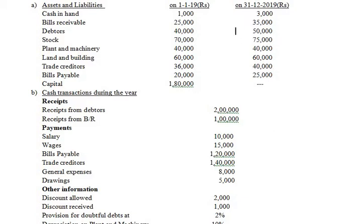When converting single entry data into double entry system, these six steps must be followed. The first step is to prepare the opening statement of affairs. However, in this question both the opening and closing data are already given, so we need not prepare the opening statement of affairs — that step is skipped.